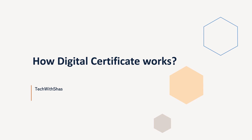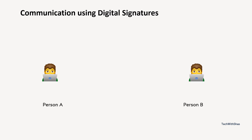But before that, if we want to understand this, let us first understand how the public key and private key encryption works in case we want to use digital signatures. Suppose we have a person A and person B who want to communicate over the internet. And we know that the internet is filled with intruders or hackers. If they communicate with each other using plain text communication, then somebody can eavesdrop on their communication and read it.